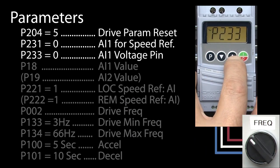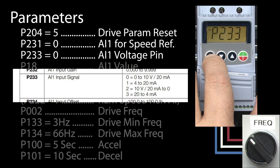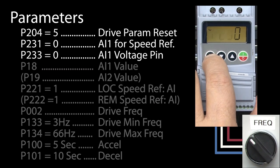Next, we need to go to parameter 233 to tell the drive we're using the analog input as a 0 to 10 volt signal. The manual tells me that needs to be a zero, and again, that's the default value for this drive, so we're good to go there.